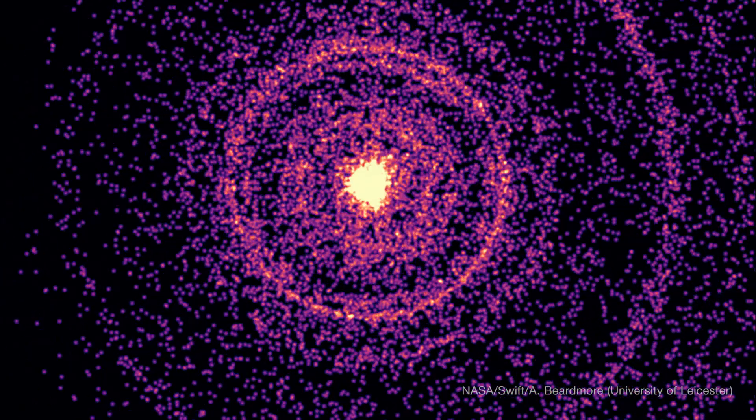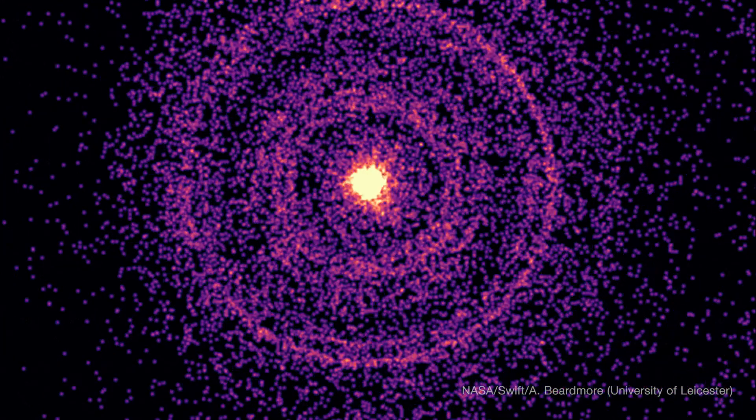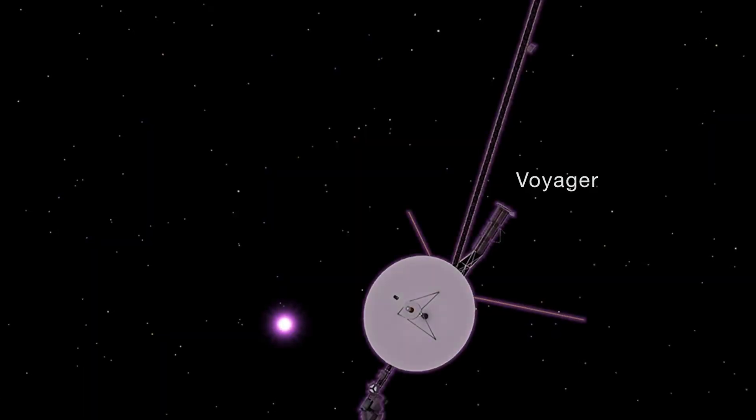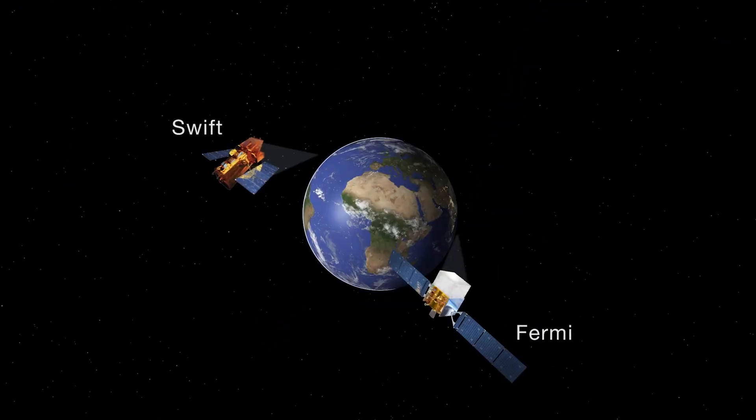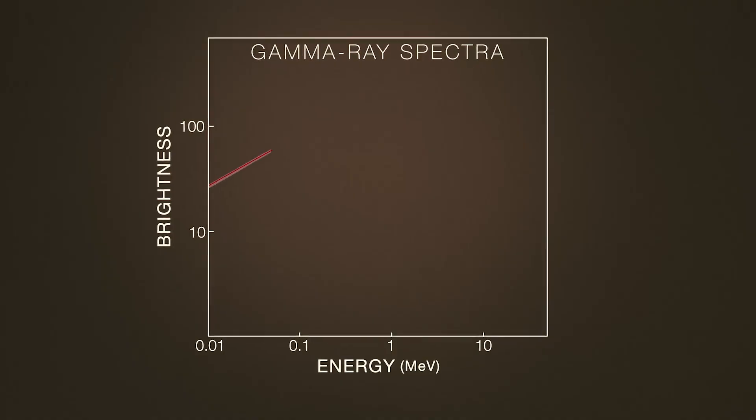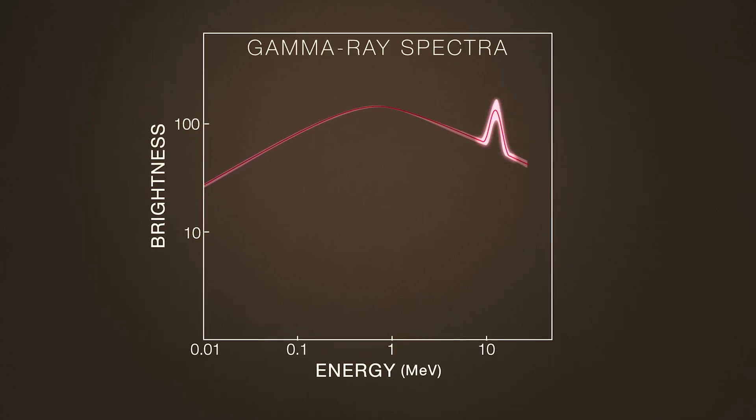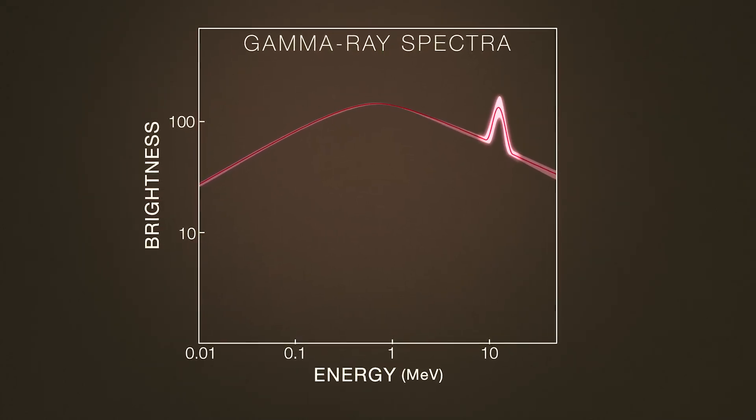In late 2022, the brightest gamma-ray burst ever seen shocked astronomers and even temporarily blinded many high-energy detectors in space. Now, a study of the first few minutes of this burst has found an important feature not seen before.